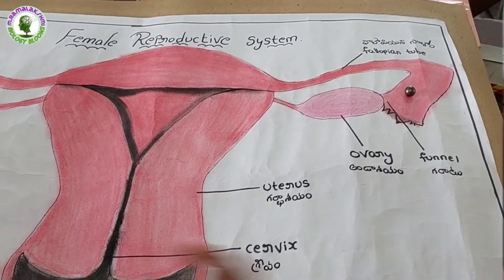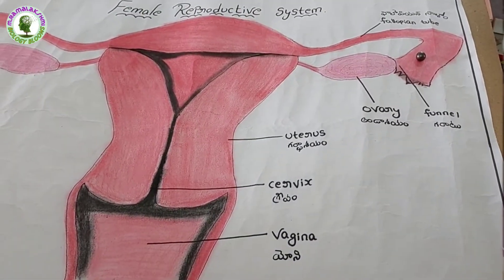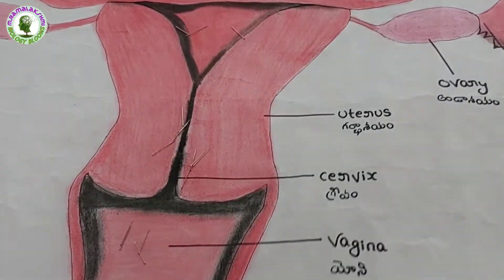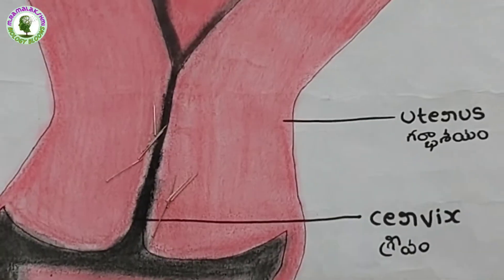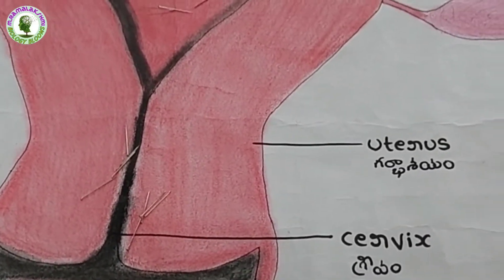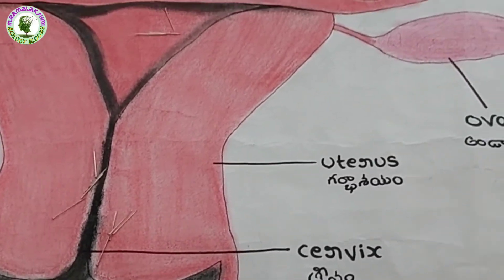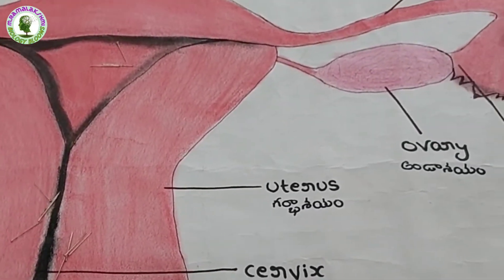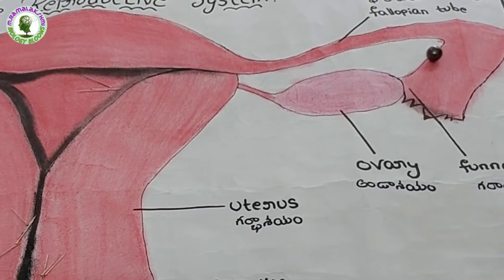At this time, if sperms are present in the female reproductive system, the fertilization of the egg with the sperm cell takes place in the fallopian tube.